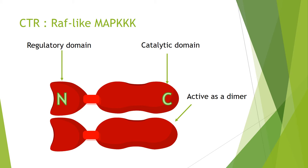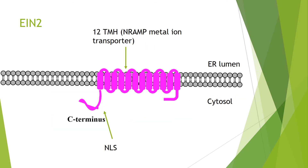CTR1, although it lacks any transmembrane regions, is actually present at the ER membrane due to its physical association with the receptors. It's RAF-like, so it's interesting that we haven't identified any downstream factors of the MAP kinase pathway that CTR1 would activate. In fact, the main target of CTR1 is EIN2, which is also found in the ER membrane. EIN2 is an integral membrane protein with 12 transmembrane helices in the ER, meaning they can all interact and form large multimeric signaling complexes.